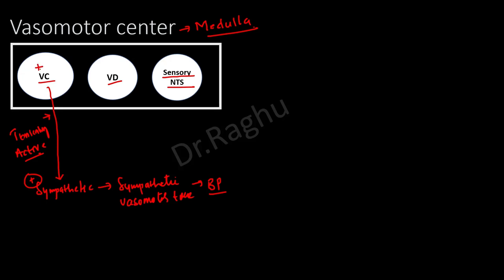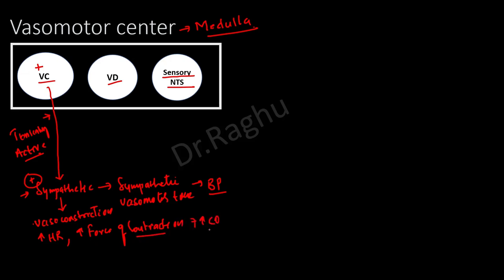Whenever the vasoconstrictor area is stimulated, there is stimulation of the sympathetic nervous system. This has three important effects: vasoconstriction, an increase in heart rate, and an increase in the force of contraction of the heart, which in turn increases cardiac output.